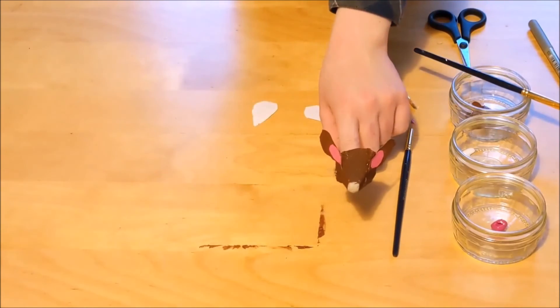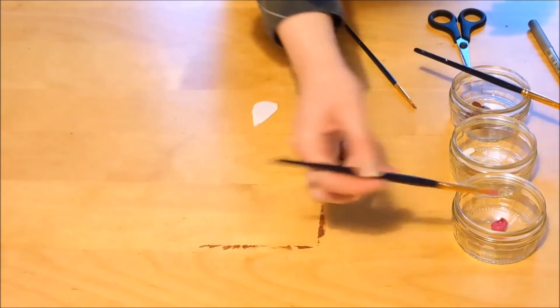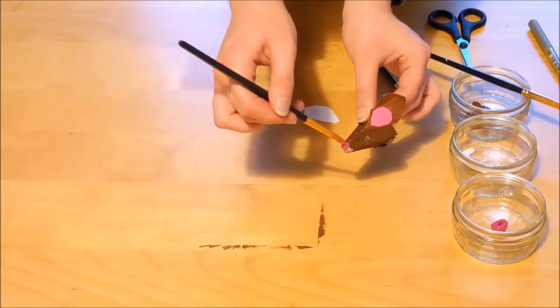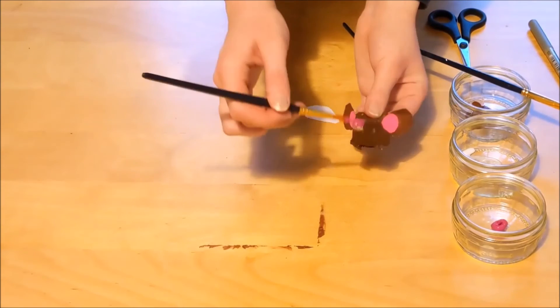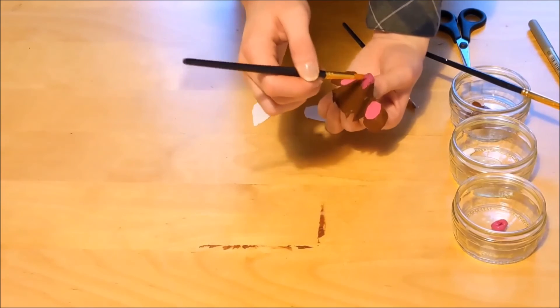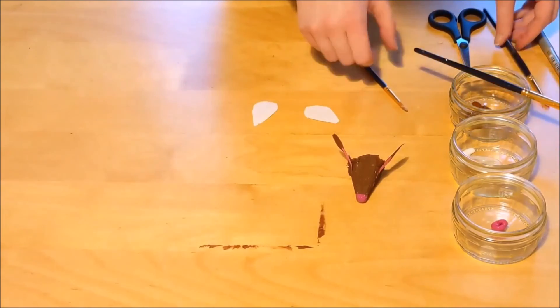We're almost there. We just need to give our mouse a nose. Get your pink paint or your pink pen and color in the front section just like this. You can wait for it to dry, or if you're impatient like me, you can do the next step straight away.